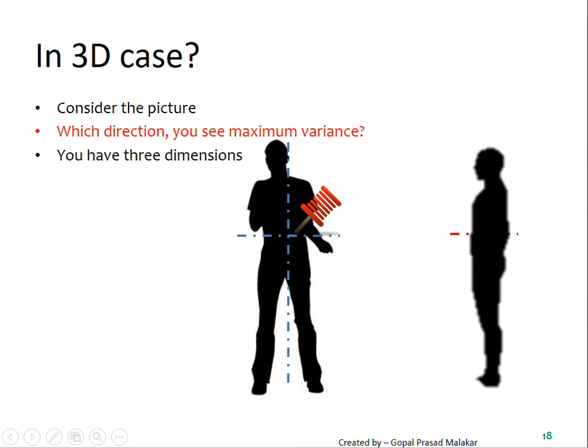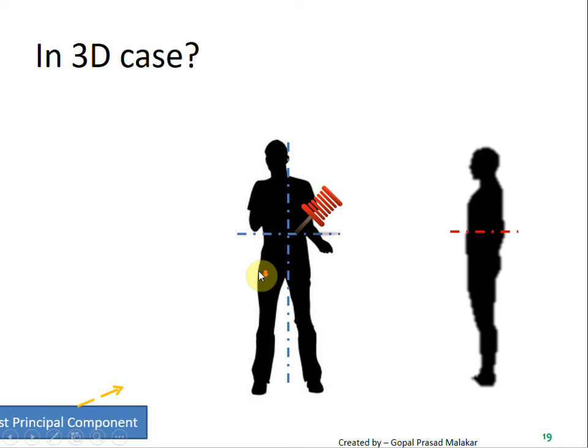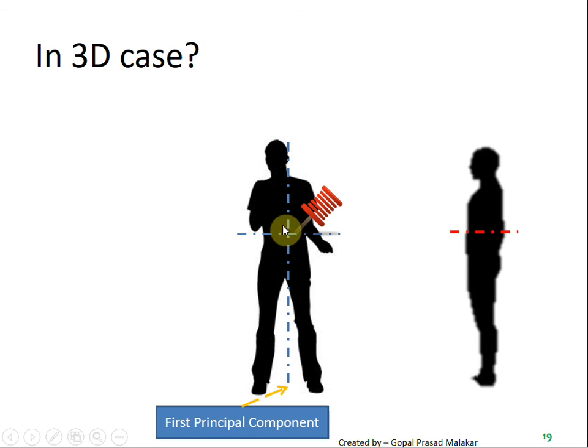Now if you apply that definition we just talked about, where when you put projections the variance is maximum, which dimension do you think is the first principal component? Obviously, if you start putting projections from all data points to this particular line, the variance will be similar to this much distance.